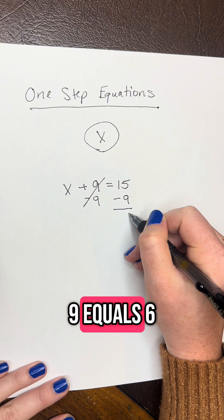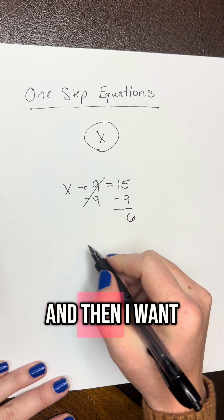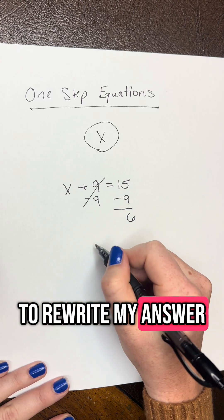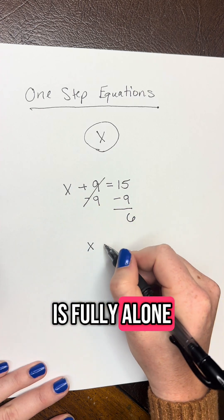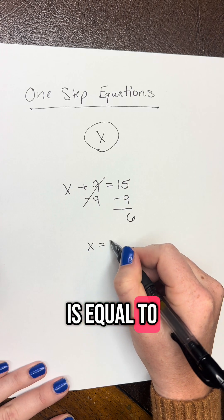So then I do 15 minus 9 equals 6. And then I want to rewrite my answer. So I'm going to do X. Now that X is fully alone, is equal to 6 here.